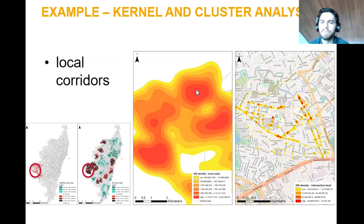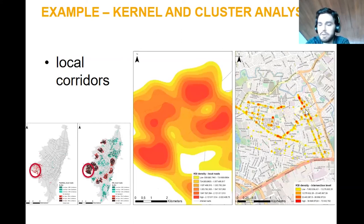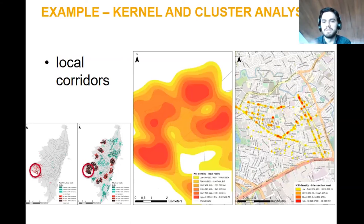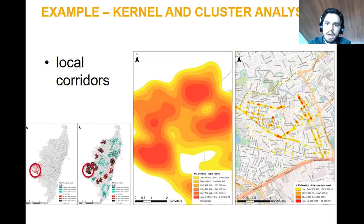That's a way of analyzing patterns in a city. There are many other ways, but this one is recommended because it has both the precision of kernel and also statistical significance analysis. This is an example we did for Colombia.